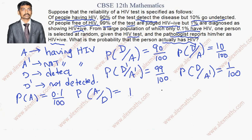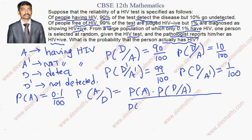Using Bayes' theorem, we will write the formula: P(A|D) = P(A) × P(D|A), whole divided by P(A) × P(D|A) plus P(A dash) × P(D|A dash).